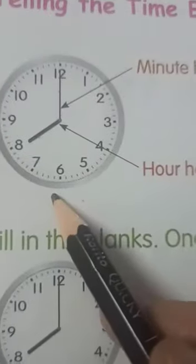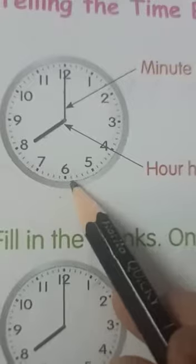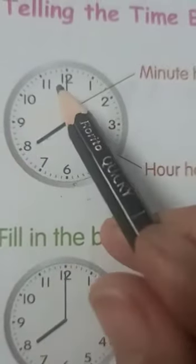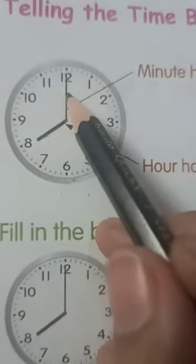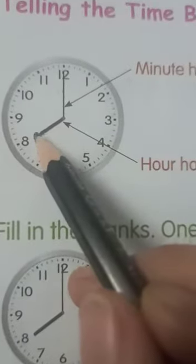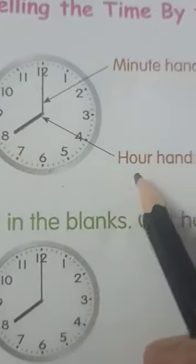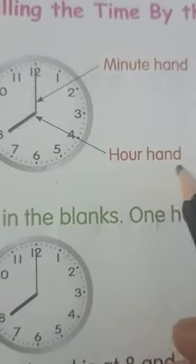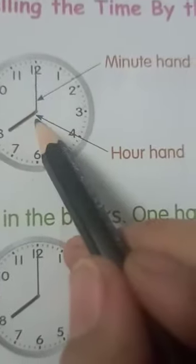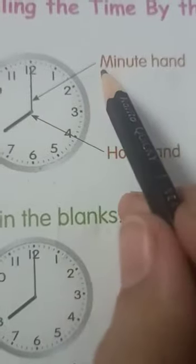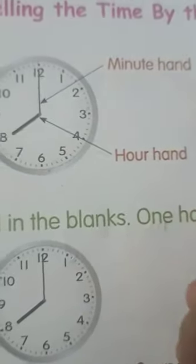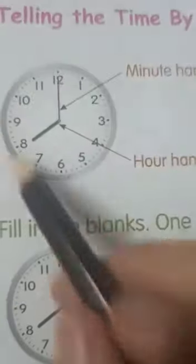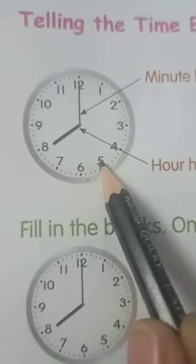This is the clock where 1 to 12 numbers are marked on it. And it has two hands. One long hand and the short hand. This short hand represents hour hand. H-O-U-R, hour hand. And this long hand represents minute hand. M-I-N-U-T-E, minute, H-A-N-D, hand. Together, they all tell us the time.